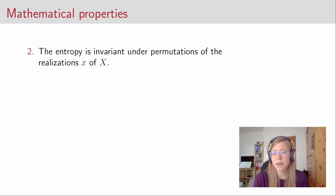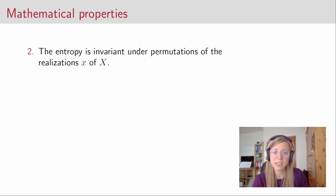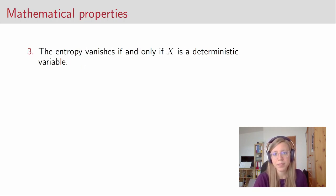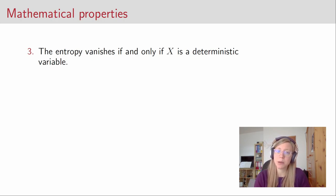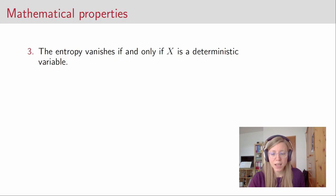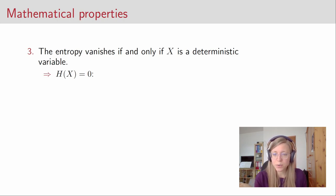The next mathematical property is that the entropy is invariant under permutations of the realizations of the random variable. This just follows from the fact that the entropy function only depends on the probabilities of the realizations and not on the value of the realization itself. The third property is that the entropy vanishes if and only if X is a deterministic variable. Intuitively this makes sense because if X is a deterministic variable, then we do not learn anything by seeing an outcome of X because we always know in advance which outcome it will put out.